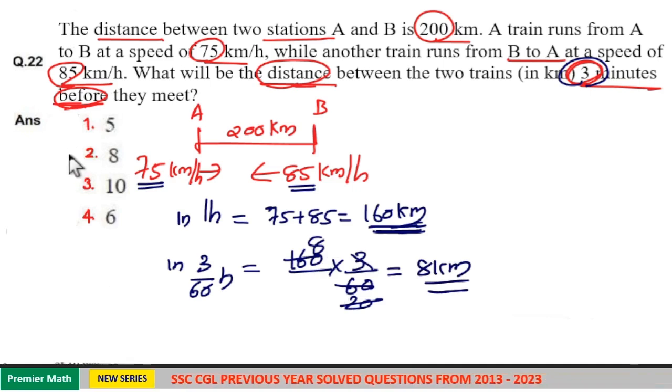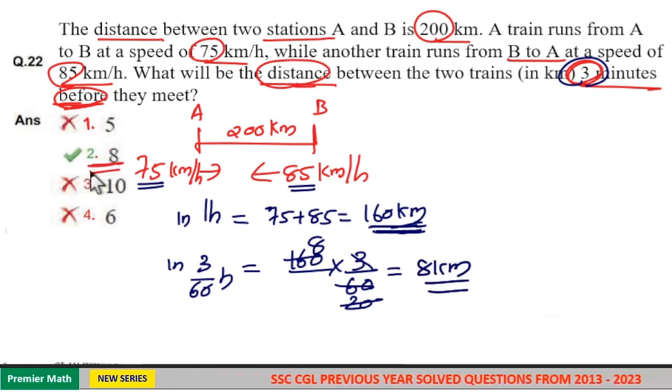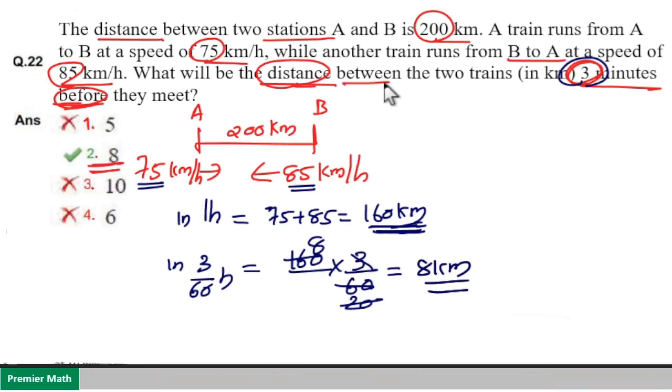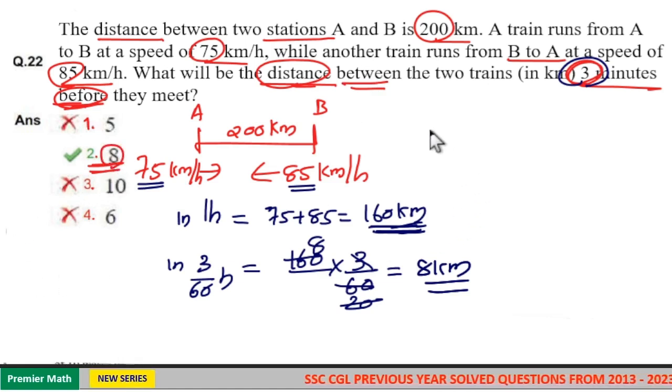Option 2 is your answer. Three minutes before they meet, the distance between these two trains is 8 km.